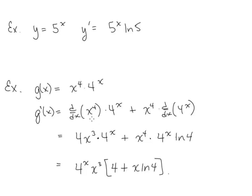I want to point out the difference in differentiation rules used here for x to the 4th versus 4 to the x. x to the 4th is a power function — it has x, the variable, in the base. Whereas 4 to the x is an exponential function because x is in the exponent. When x is on ground level and you have a number on top, that's a power function, giving us 4x to the 3rd. With a constant base and variable exponent, that's an exponential function and we use our new derivative rule.